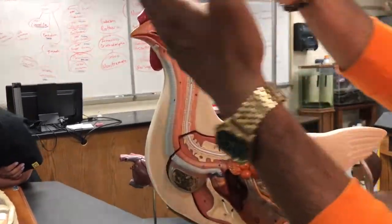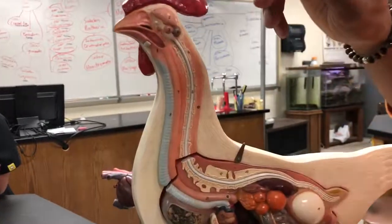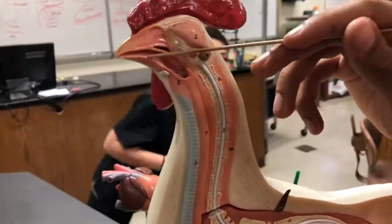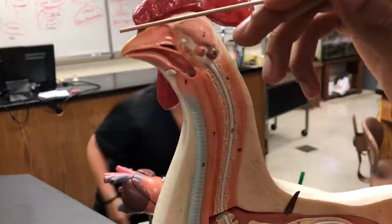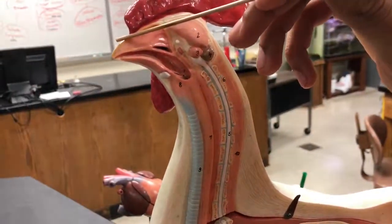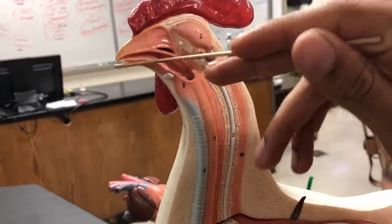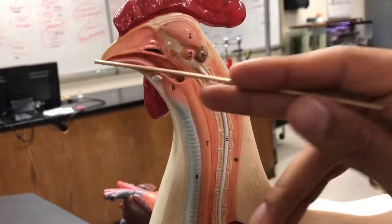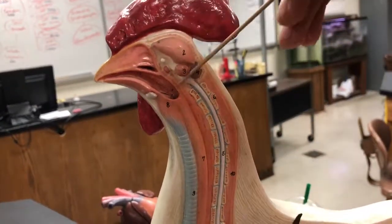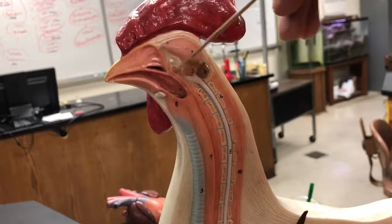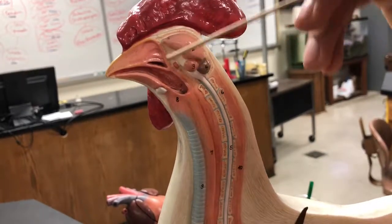As we look at the anterior side, right here this structure is called the tongue. On top we have the maxillary beak and on the bottom we have the mandibular beak, and this hole right here is the glottis in the region of the pharynx.